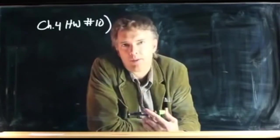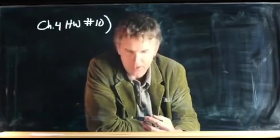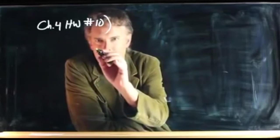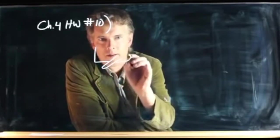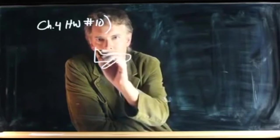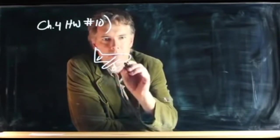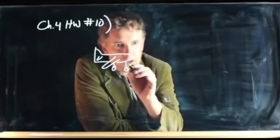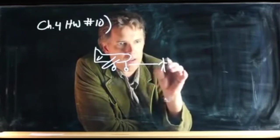They want to know what's the greatest acceleration that the man can give the airplane. The picture looks a little like this — we have an airplane, it's got wheels on it, and they tell us those wheels are frictionless. And then we have a man that is going to pull on the airplane.